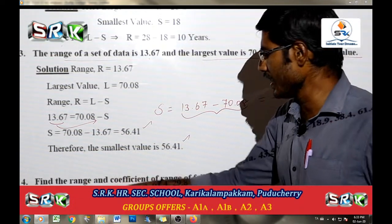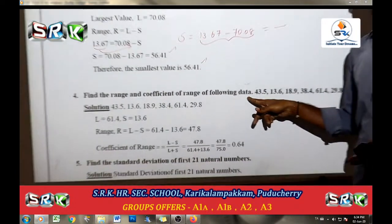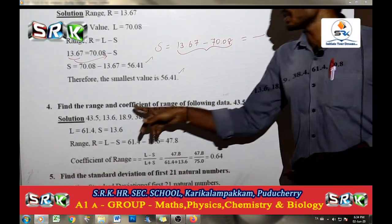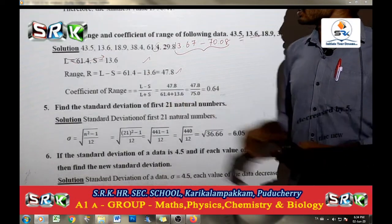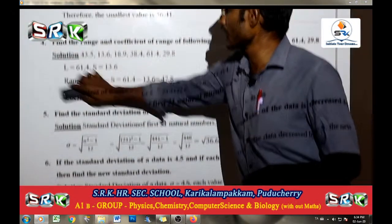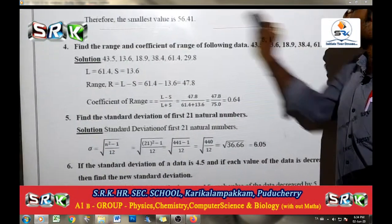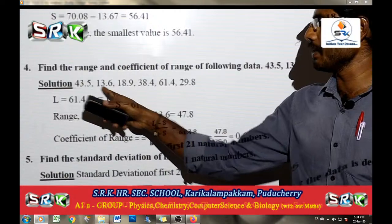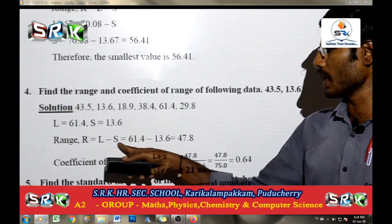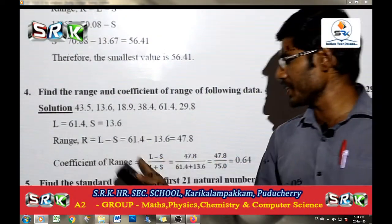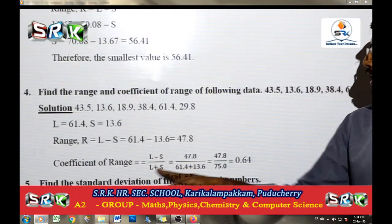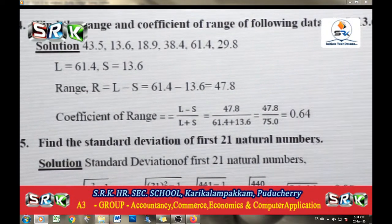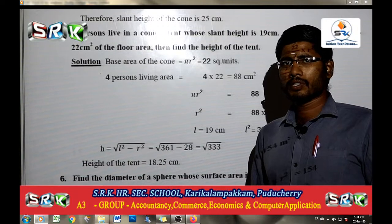Find the range and coefficient of range of the following data including 43.5. The largest value is 61.4 and the smallest value is 13.6. Range R equals L minus S. Coefficient of range equals (L minus S) divided by (L plus S), applying the formula gives a value of 0.64.